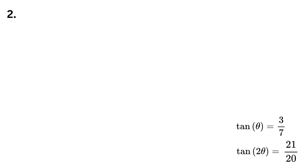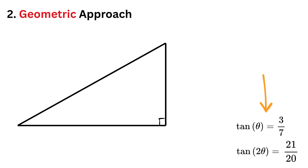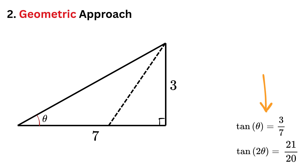Now let us look at the second method, which is the geometric approach. Tan theta is 3 over 7, so make a right triangle such that this angle is theta. Tan theta is opposite over adjacent, so keep the opposite side as 3 and the adjacent side as 7. Now draw a line such that this angle is also equal to theta. So what will be the value of this outer angle?